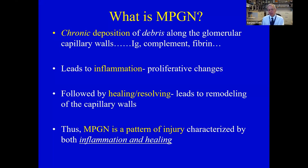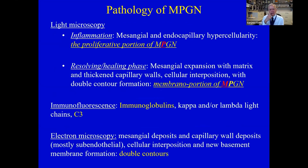There's a resolving phase, which is often manifested by these double contours — we'll get into that. The way I look at it, MPGN is really a pattern of injury where you have both inflammation and resolving happening at the same time. Or maybe inflammation comes first and then resolving later, but more often than not it's a mixed picture with inflammation and resolving occurring simultaneously.